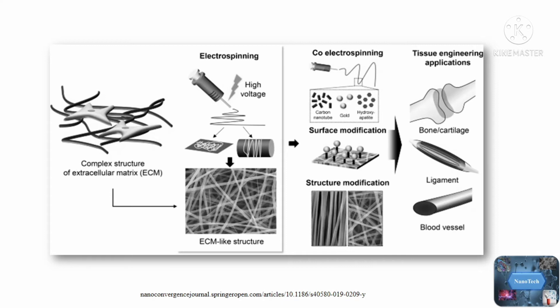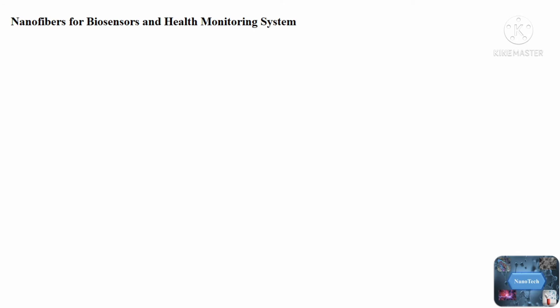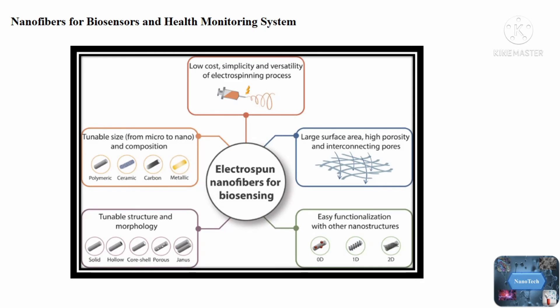Nanofibers for biosensors and healthcare monitoring systems: nanofiber technology has opened a promising new window in the design and fabrication of miniaturized biosensors with a high surface-to-volume ratio for immobilization and sensing, improved catalytic properties of electrodes, and exceptional ability to boost desired sensitivity, specificity, and reaction rate acceleration. Nanofiber-based biosensors have the potential to develop towards single-molecule biosensing. Electrospun nanofibers have a high surface-to-volume ratio and high porosity with interconnected voids, both important for biosensing performance. The large surface area allows them to incorporate substantial biomolecule loadings and efficiently interact with analytes, improving biosensor sensitivity.